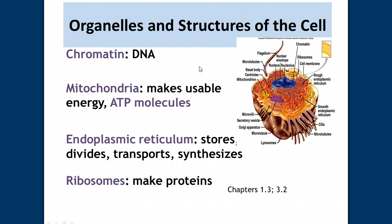Organelles — from macromolecules to organelles — form structures inside the cell. The chromatin is found within the nucleus and has the genetic information, or DNA. The mitochondria is the organelle responsible for making the most ATP, which is the energy currency for our cells to use for all kinds of activities — ATP is very important for usable energy. The endoplasmic reticulum stores, transports, and synthesizes fats and helps break down drugs; it's sort of like a transport system. Ribosomes are responsible for making proteins, those complex macromolecules.